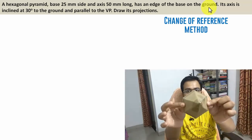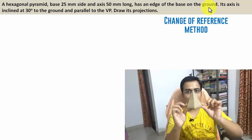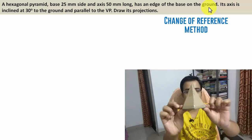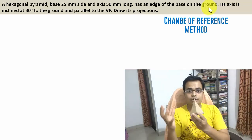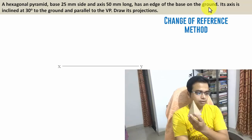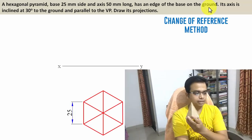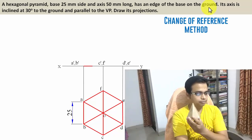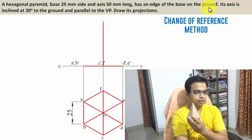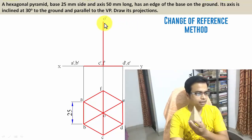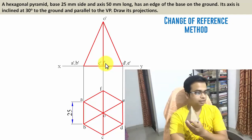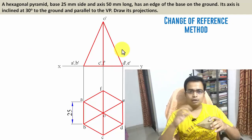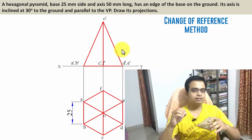That's the top view — a hexagon — and that's the front view for the hexagonal pyramid. Now this height has to be taken as 50 millimeters. Now that the front view is done, let's talk about the axis inclination. The axis is inclined to the horizontal plane.